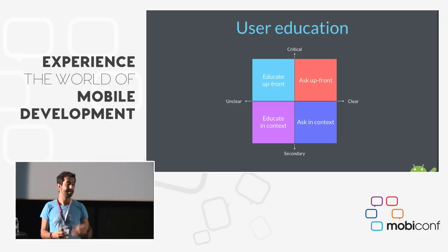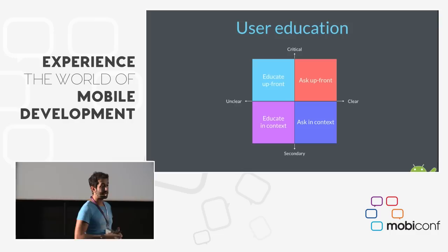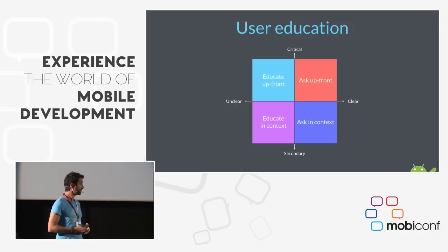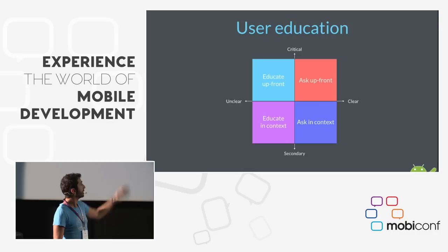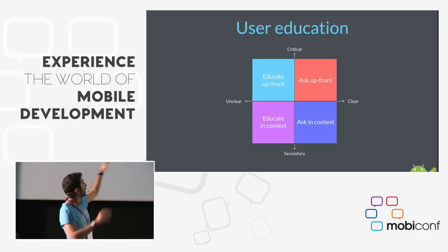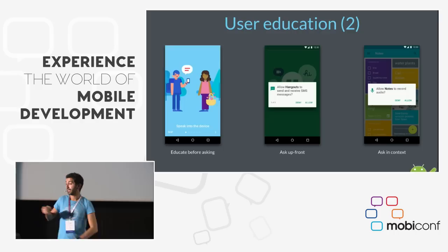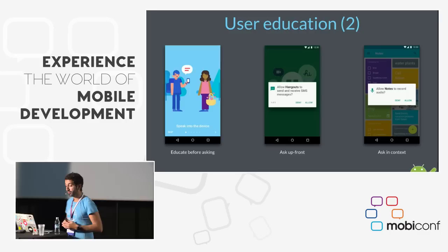User education — this is really important and Google is putting a lot of effort here. We should educate our users about why we're asking for a permission, because it makes no sense to just say 'this app wants to access your contacts' without context. Google has divided education into four big factors: educate upfront, ask upfront, educate in context, and ask in context. Depending on which we use, Google locates this education as critical, secondary, clear, or unclear for the user.